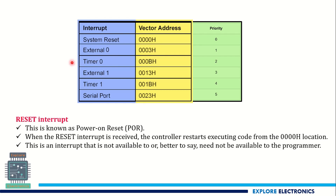Similarly, timer zero interrupt has vector address 000BH, external interrupt 1 has 0013H, timer 1 interrupt has vector address 001BH, and if the serial port interrupt occurs, the program counter address is 0023H.